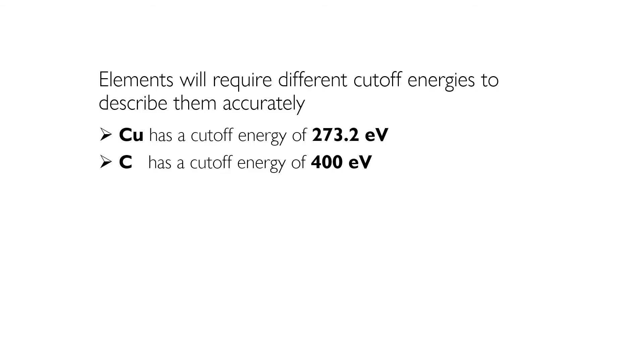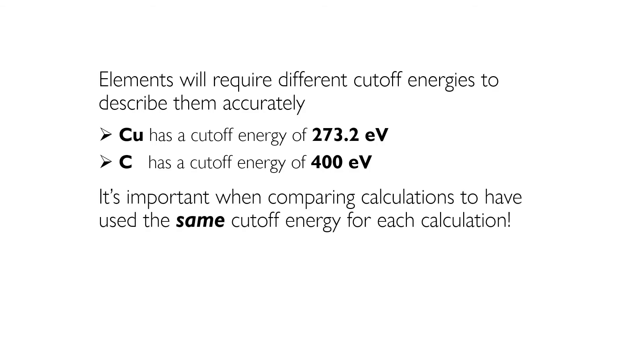For instance, in VASP, copper has a cutoff energy of 273.2 eV, while carbon has a cutoff energy of 400 eV. It's important that when you want to compare calculations involving these two compounds, that you use the same cutoff energy when you do the calculation. Otherwise, you'll introduce systematic errors into your results.